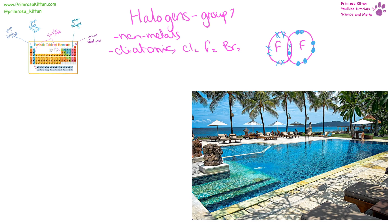Because halogens only want to gain one electron, a nice easy way for them to do that is sharing an electron with another atom of the same element. So fluorine can easily gain an extra electron by sharing it with another fluorine. They are highly reactive because they only want to gain one electron, and the most reactive ones are going to be at the top.